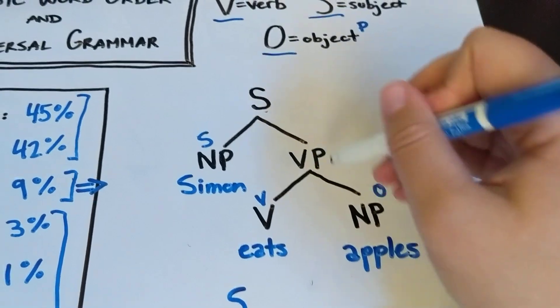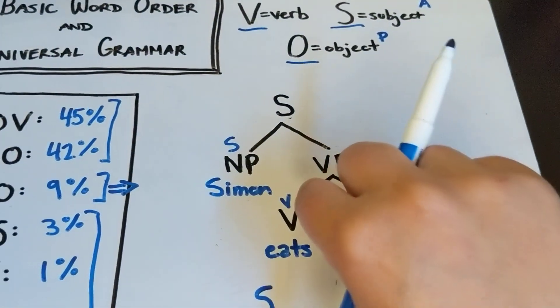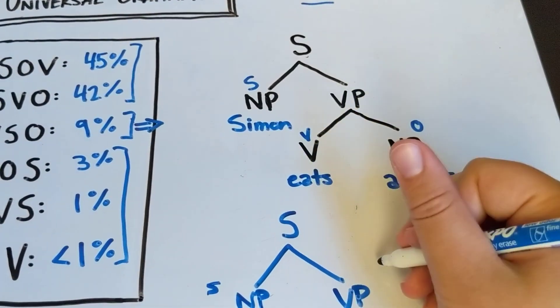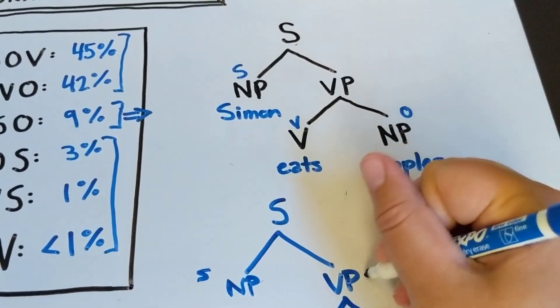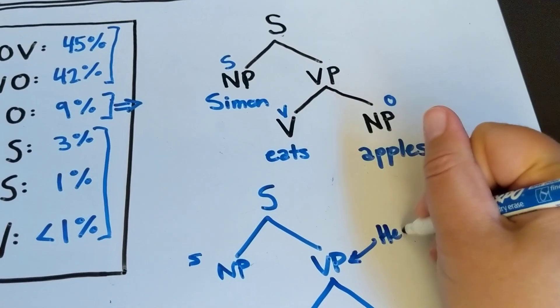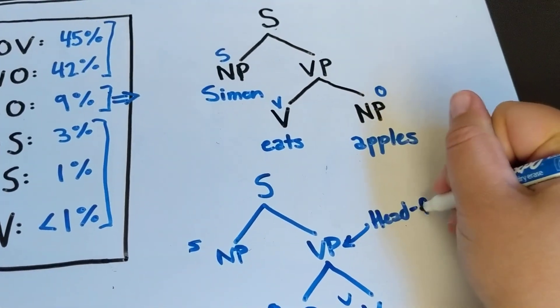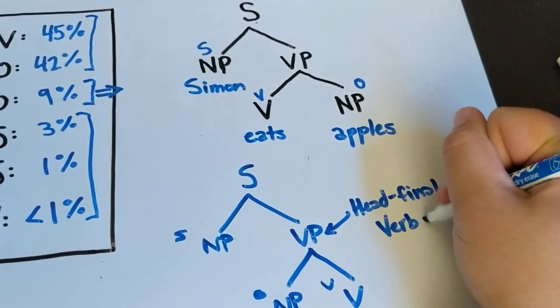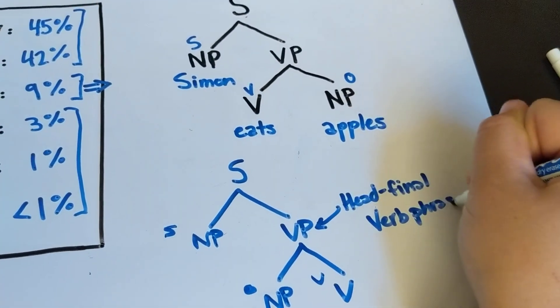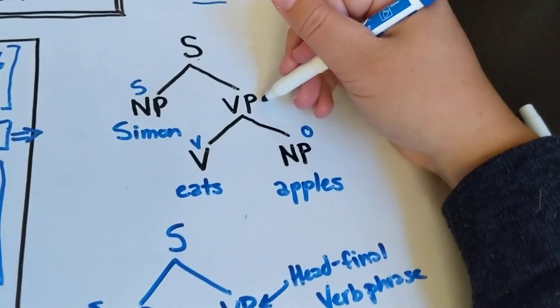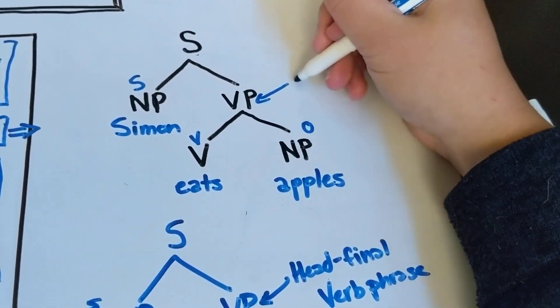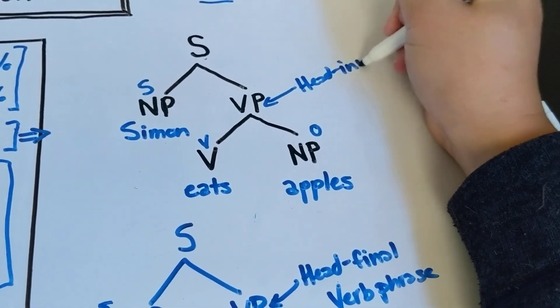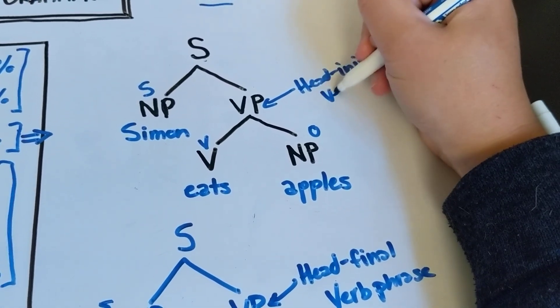So all that we're doing to make this SOV is essentially rotating this like a mobile. If you've seen a mobile, this is essentially all you're doing is rotating this little verb phrase. So we say that this language has head final verb phrases, and this has a head initial verb phrase.